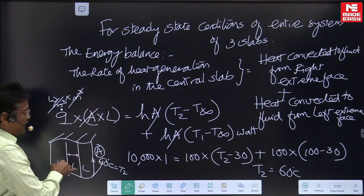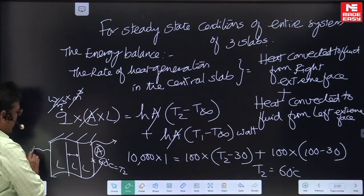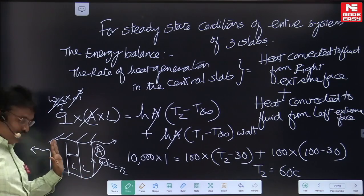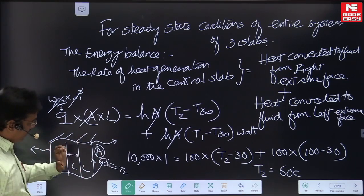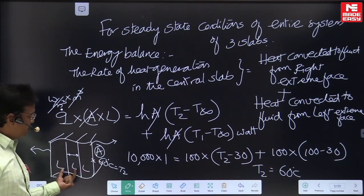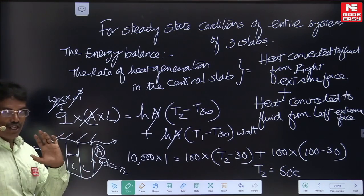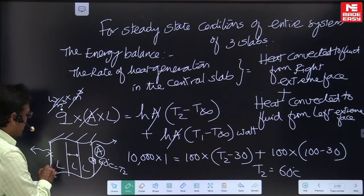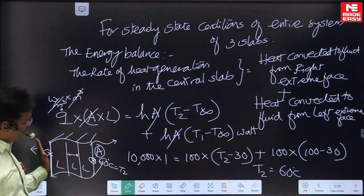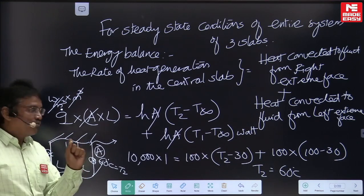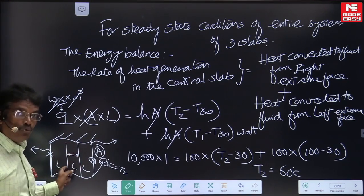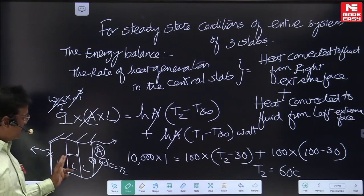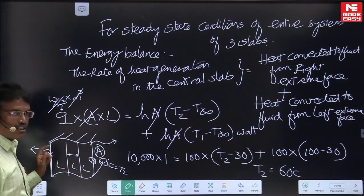Some students may get a doubt: since the right and left side fluids are at the same temperature, the convective heat transfer coefficients are the same, and dimensions also appear to be the same — why are the right side and left side extreme face temperatures different? The answer is that the central slab is generating heat non-uniformly. Please note that while 10,000 W/m³ is given as the average value for the entire central slab, the heat generation is non-uniform, and that is the reason why the right and left extreme temperatures are not equal.